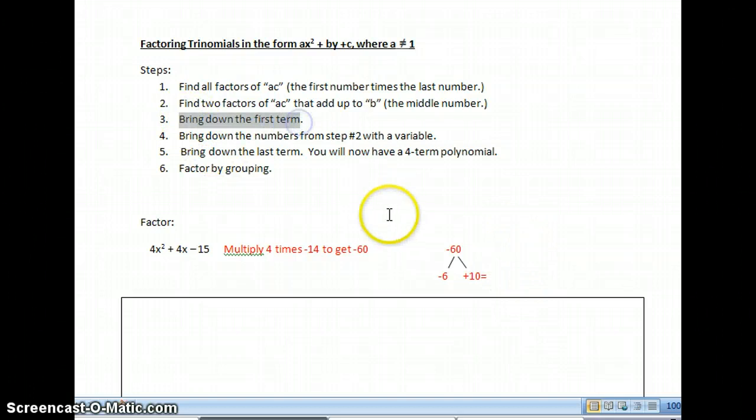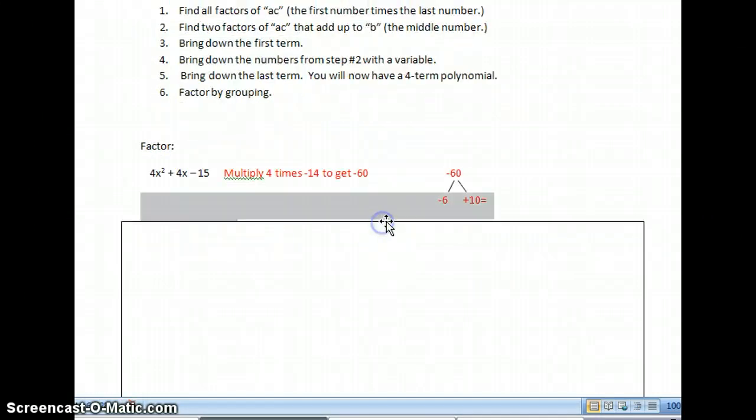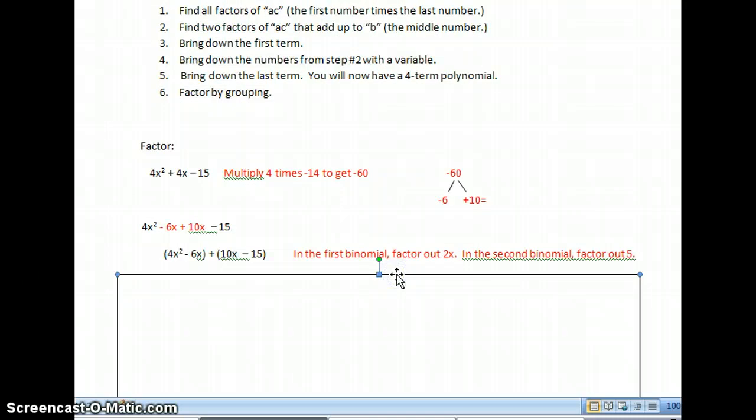So now what I'm going to do is first bring down the first term. So this is part of the step where you just do it. I'm going to bring down the first term. So my 4x squared comes down and is 4x squared. Now my second term plus 4x is now going to become two terms. It's going to become minus 6x plus 10x. And I can, I put it in red so you can see, and I can kind of look at this and say, well, minus 6 plus 10 gives me plus 4. Great. Then I'm going to bring down the last term, minus 15, and just bring it down there. So I've got a four term polynomial.